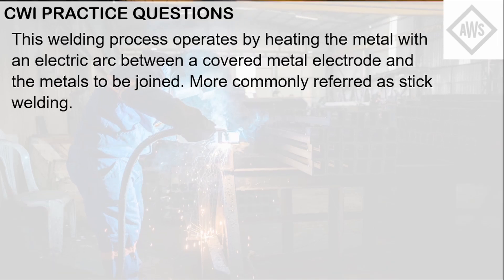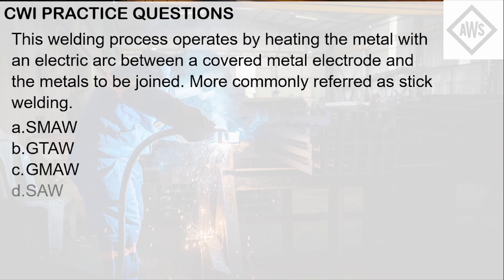For the first question: this welding process operates by heating the metal with an electric arc between a covered metal electrode and the metals to be joined, more commonly referred to as stick welding. Letter A: SMAW. Letter B: GTAW. Letter C: GMAW. Letter D: SAW. GTAW is gas tungsten arc welding or TIG welding, so that's not correct. Letter C, GMAW, is gas metal arc welding or MIG welding, also not correct. Letter D is SAW, or submerged arc welding — a fully automatic process. So the answer is letter A: SMAW, known as stick welding.